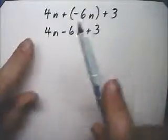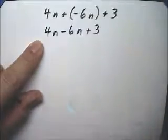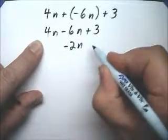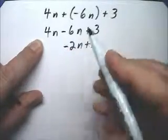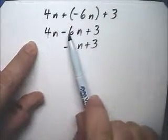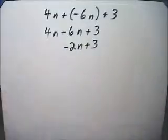So similarly here, we have four of them and we owe two of them. So this answer is minus 2n plus 3. Because when we combine this, the positive 4 and the negative 6 add up to negative 2.